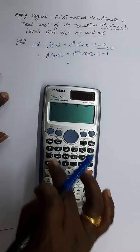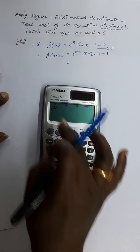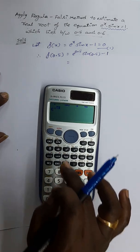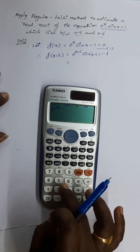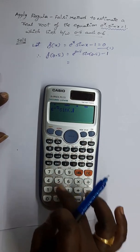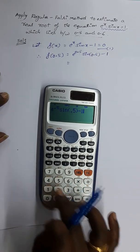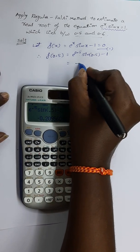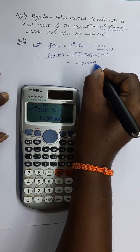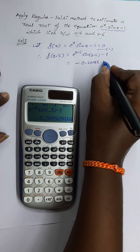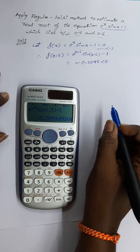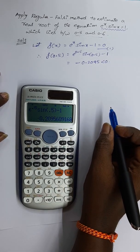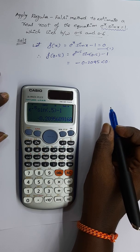Now calculate any value. Press Shift + ln, which gives e^x. We need e^0.5 · sin(0.5) − 1. You will get a negative result, which is −0.2095. Don't forget: whenever the given equation contains sin, cos, or other trigonometric functions, we should set the calculator to radians mode.